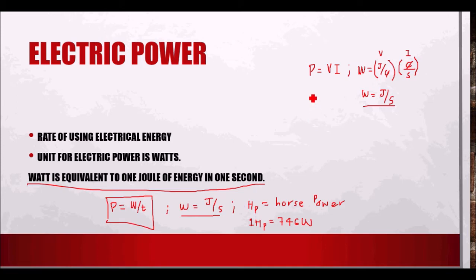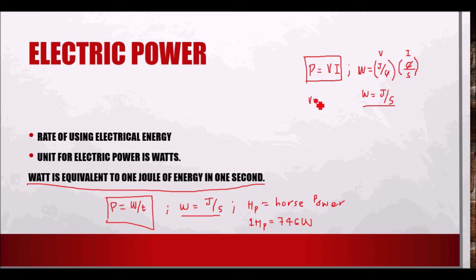So the formula for power in terms of voltage and current is P = V × I, or power equals voltage times current. If voltage is missing, by algebraic manipulation that is V = P/I. If current is the required, then I = P/V. You can also use another triangle — the power triangle — to derive these formulas.